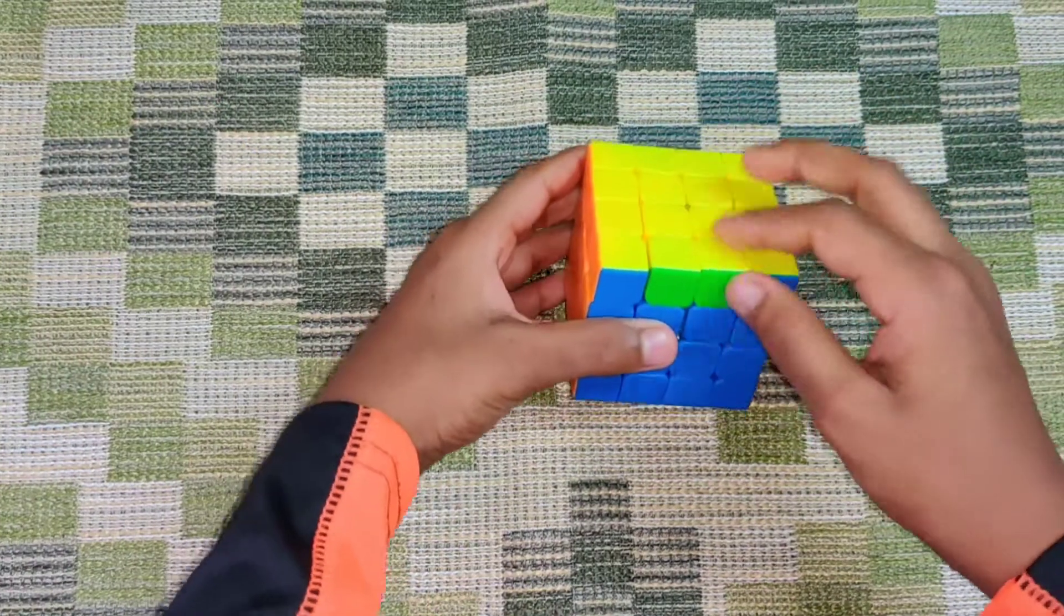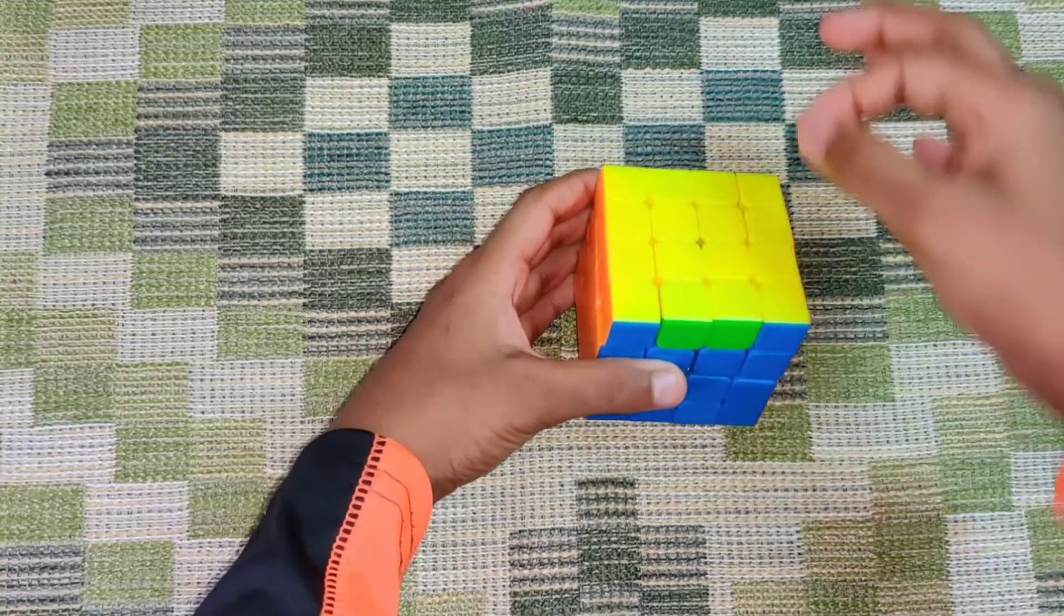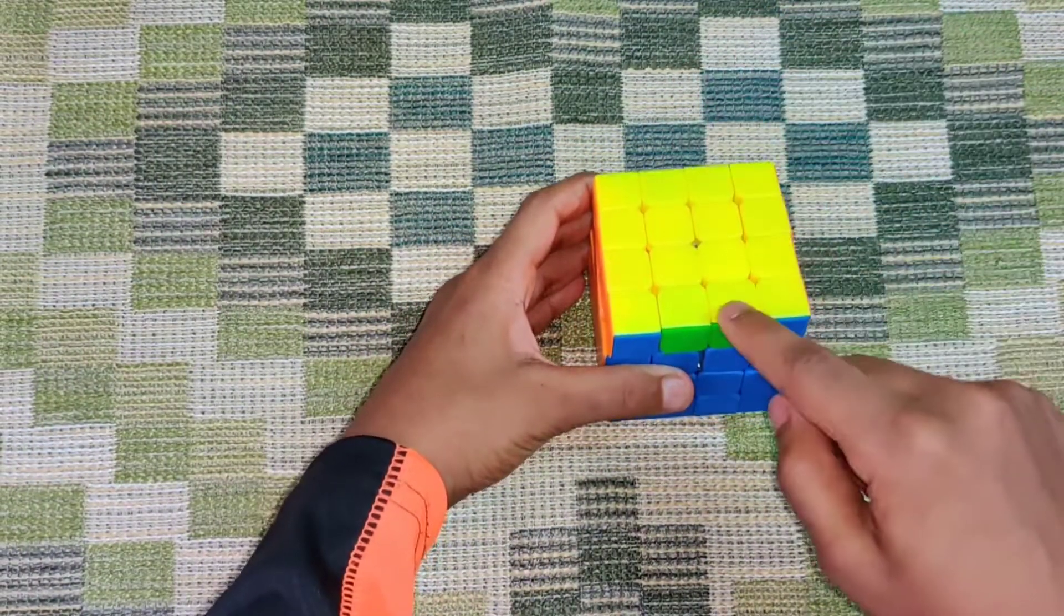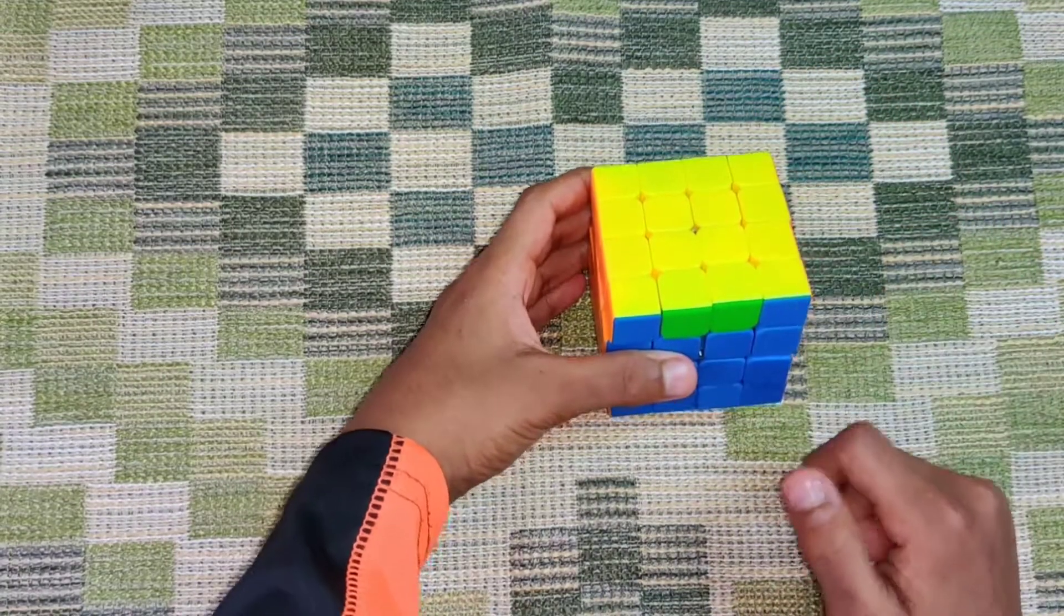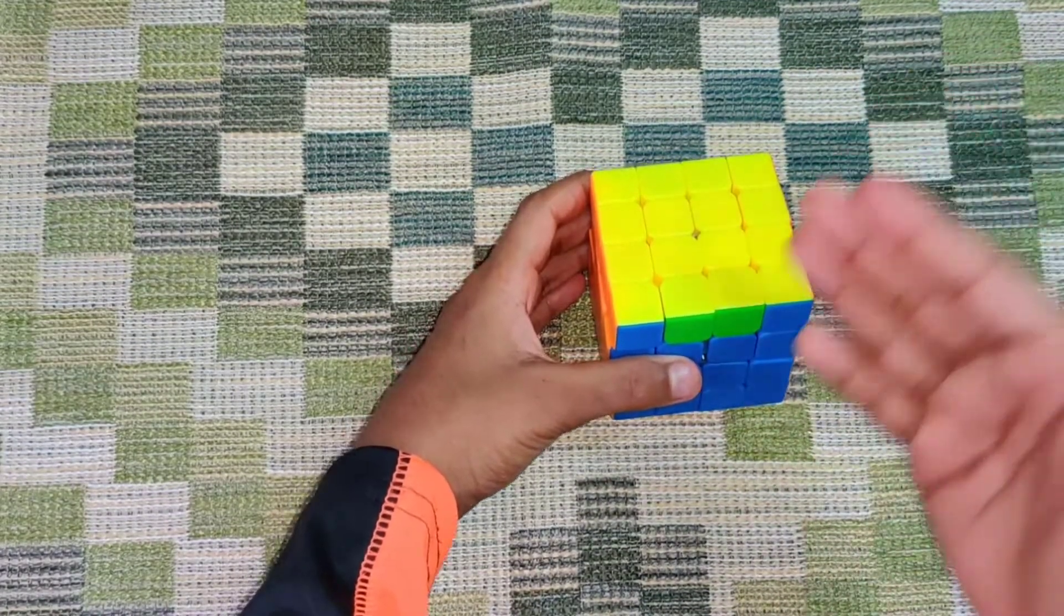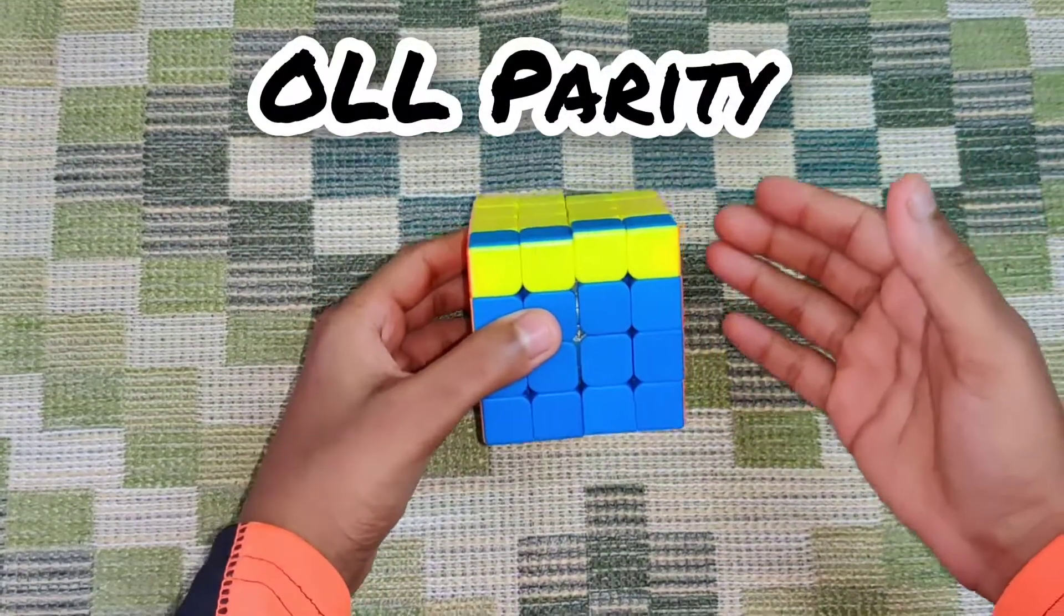But here what is happening is you're not swapping this with this, swapping this with this and this with this. That is why it is possible on a 4x4. All right, so now I'm going to show you guys how to do OLL parity on a 4x4.